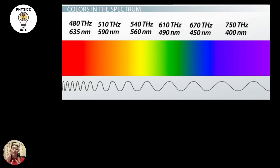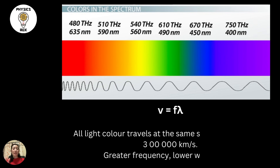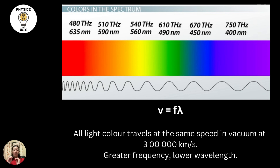To remember this relationship, recall the wave equation V equals F lambda, where V is the wave speed, F is the frequency, and lambda is the wavelength. All light colours — red, orange, yellow, green, blue, indigo, violet — travel at the same speed in vacuum at 300,000 kilometres per second, or 3 times 10 to the power of 8 metres per second.